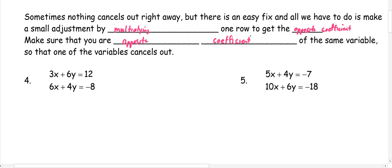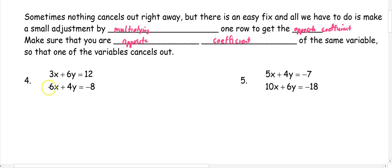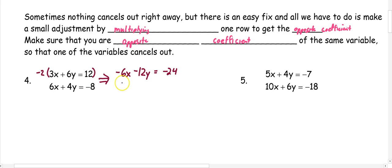So in number 4, we have 3x plus 6y equals 12, and 6x plus 4y equals negative 8. Right now nothing cancels out, so I need to think: can I multiply 3 with something to cancel out with 6, or 6 to cancel out with 4? I know I can easily multiply 3 to get 6, but since we already have a positive 6 we need a negative 6, so we're going to multiply everything in the first equation by negative 2. All three terms must get multiplied, so this becomes negative 6x minus 12y equals negative 24. The second equation we didn't multiply, so we rewrite it: 6x plus 4y equals negative 8. Now when I add my equations, my x's cancel out because they have opposite coefficients.